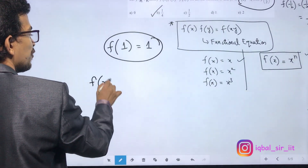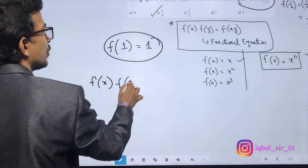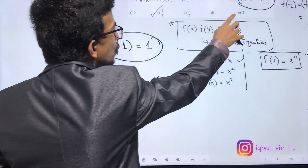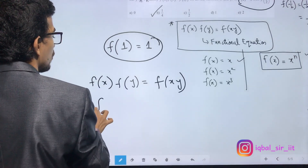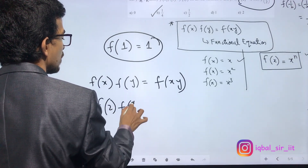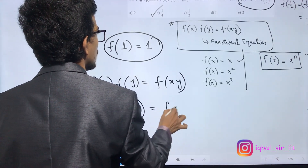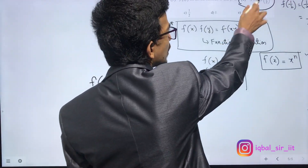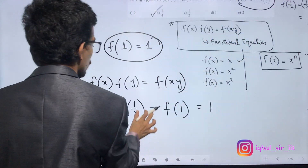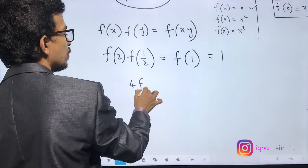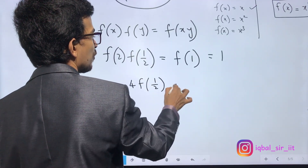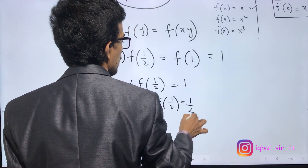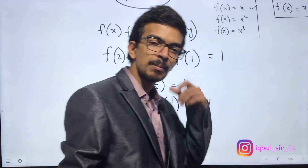We can also verify directly: setting x equals 2 and y equals 1/2 in f(x) times f(y) equals f(xy) gives f(2) times f(1/2) equals f(1). Since f(1) equals 1, and f(2) equals 4, we get 4 times f(1/2) equals 1, so f(1/2) equals 1 by 4.